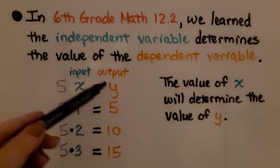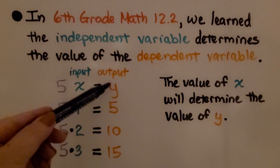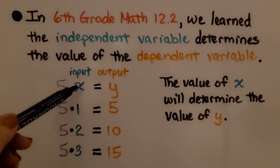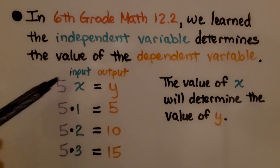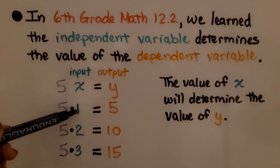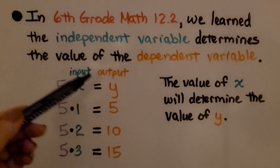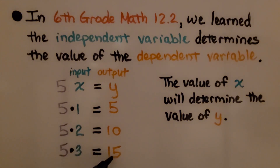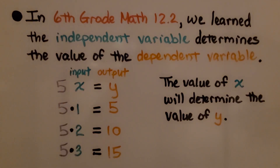What this is saying is that the output y — its value is going to depend on whatever the input x is. If the input is 1, then we have 5 times 1, which makes the output 5. If x is 2, that makes it 10. If x is 3, that makes it 15. So the value of x will determine the value of y.